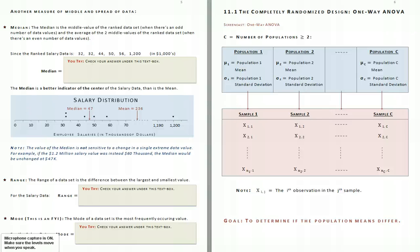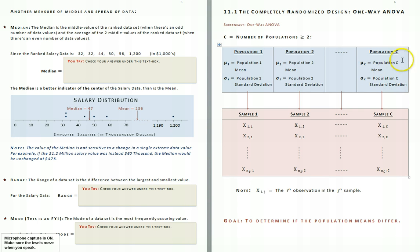Section 11.1 is about one-way analysis of variance in the more general context where the number of populations could be more than two. Generally, we might have C populations: population 1, population 2, all the way through population C. In specific examples, of course, there will be a certain number of populations.